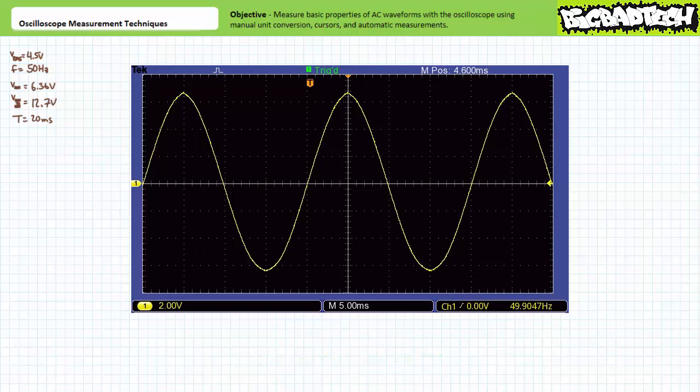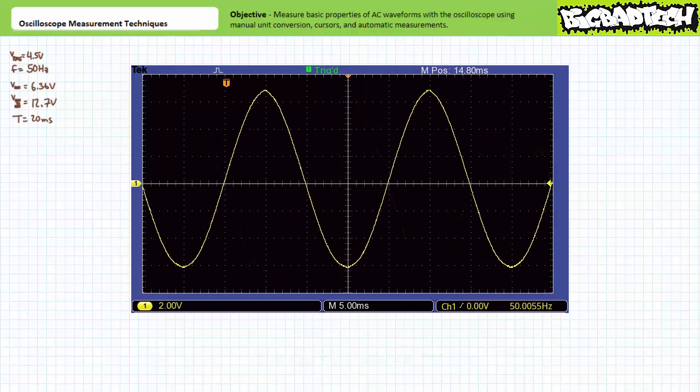We can do the same for the negative half of the cycle. We horizontally reposition the waveform until our valley aligns with the vertical axis. Note the waveform valleys between 3 and 3.2 divisions below the horizontal axis. Let's say 3.1 divisions. Given the current vertical sensitivity of 2 volts per division, this corresponds to a value of 3.1 divisions times 2 volts per division, or negative 6.2 volts. Slightly lower than we anticipated.